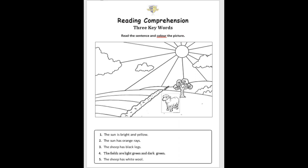Next sentence. Again, it starts with the tricky word. The sun has orange rays. Look at the sun. Can you see the rays? Yes. There are a lot of rays, and the color of the rays is orange. Well done, KG2. So now, with your orange color, you are going to color the rays.